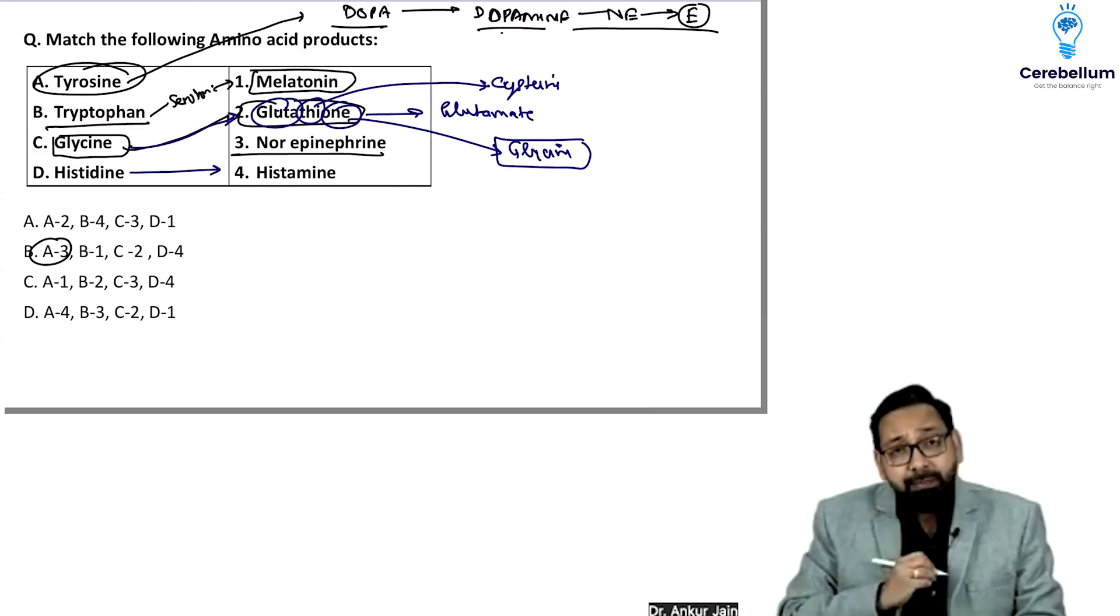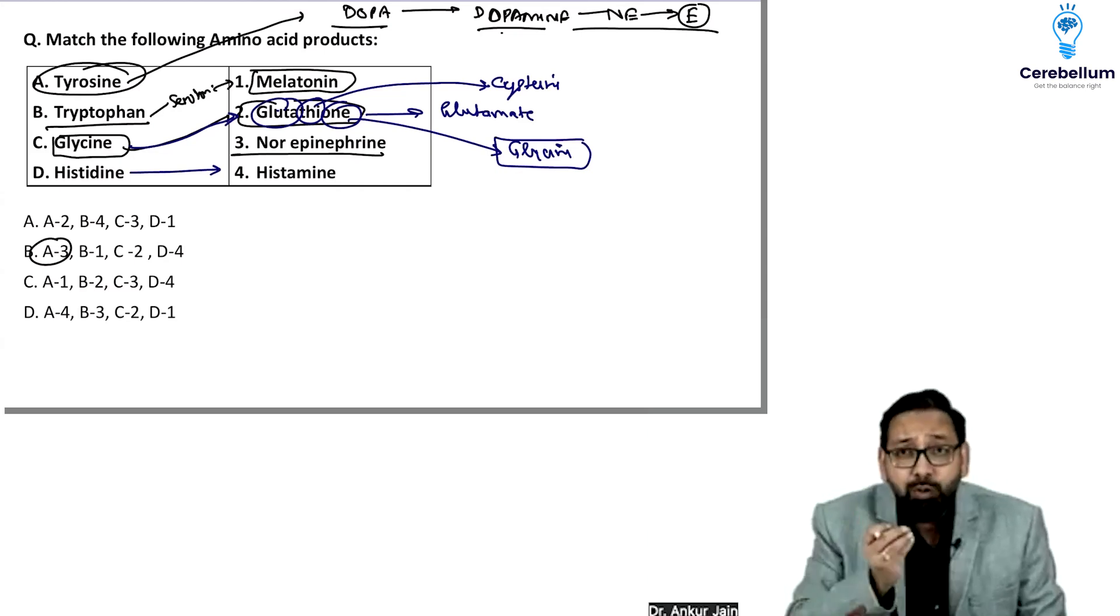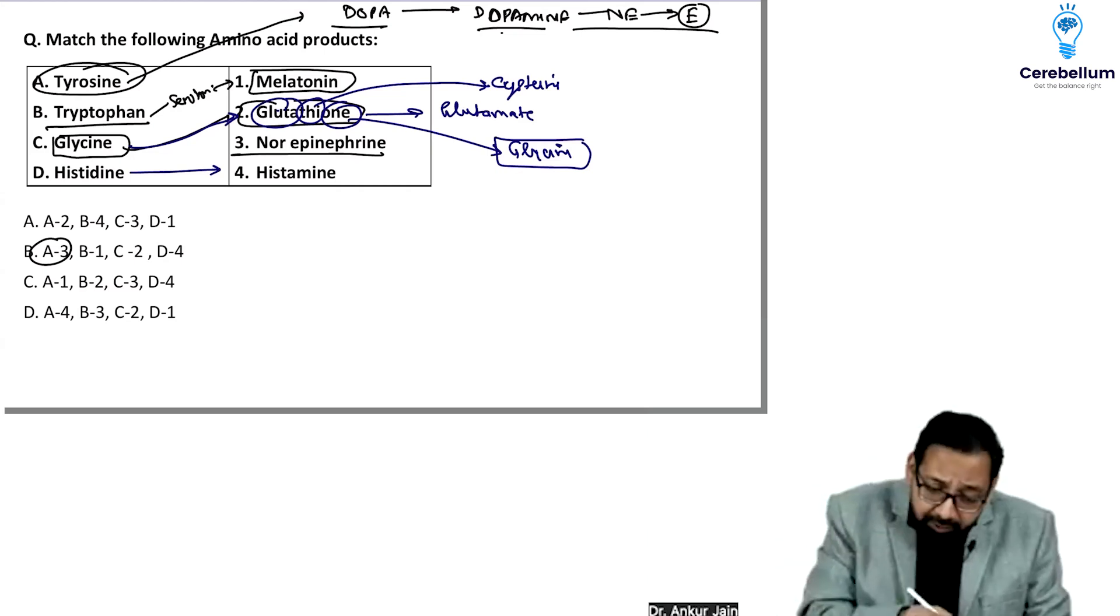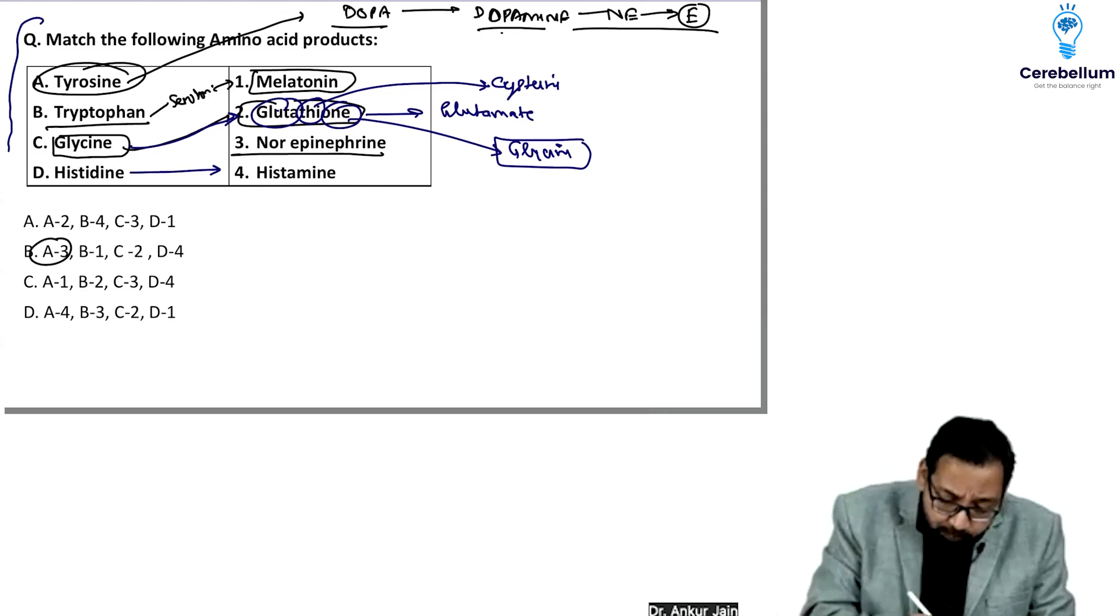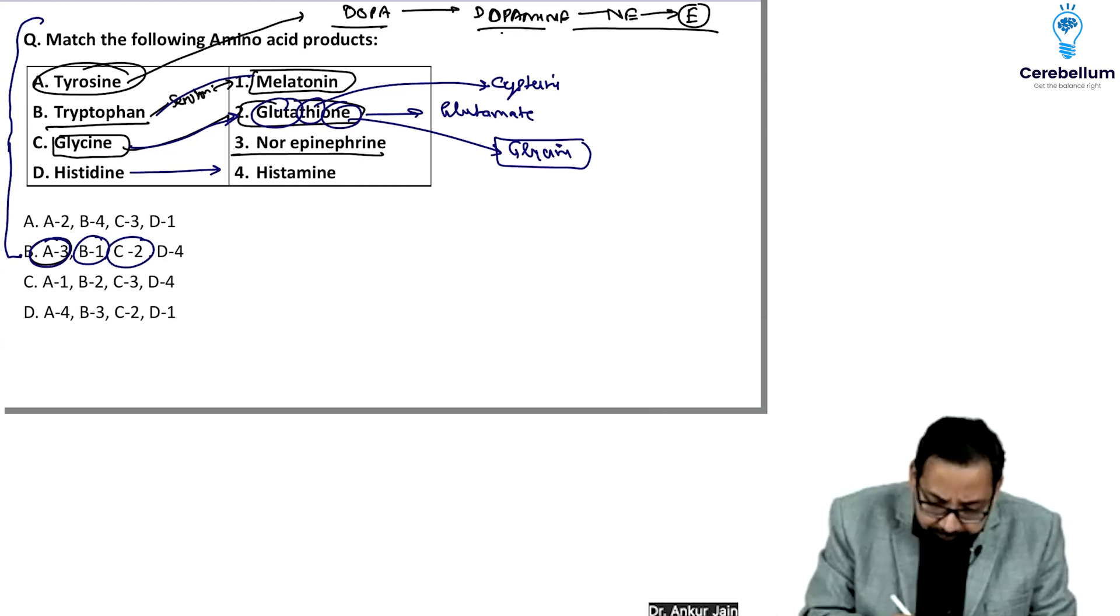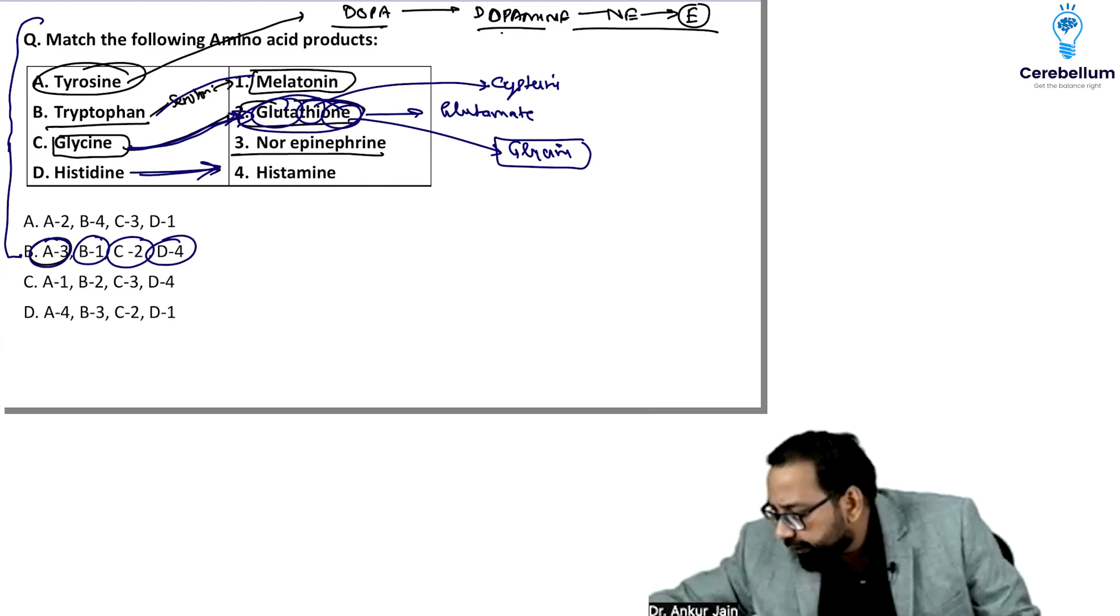Histidine is converted to histamine by simple decarboxylation. Glutamate is converted to GABA by simple decarboxylation. Previously asked topic, frequently asked. Answer is B-A-3, B-1, C-2 glutathione, and D-4 histidine to histamine.